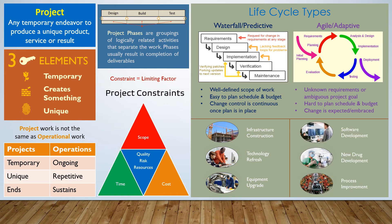Some examples of agile projects are software development, where the client might not know exactly what all the options are and the developers have to work with the client to determine what will meet their need. New drug development — like the COVID-19 vaccine — is another example, where we don't know exactly how to make the product and there will be trial and error. Process improvement is also agile — you may know what you want to accomplish but not exactly what will give you the improvements you're looking for.